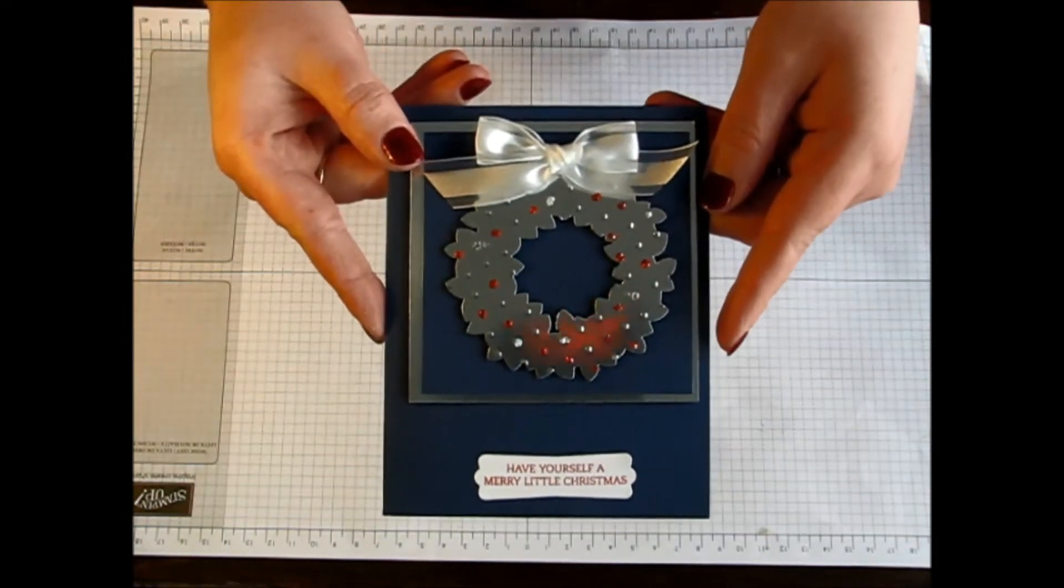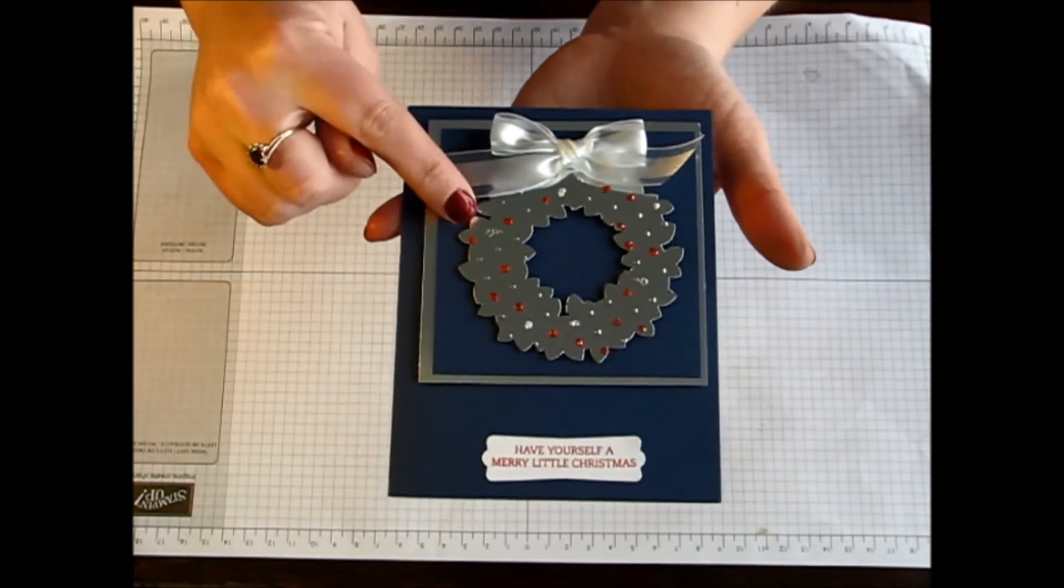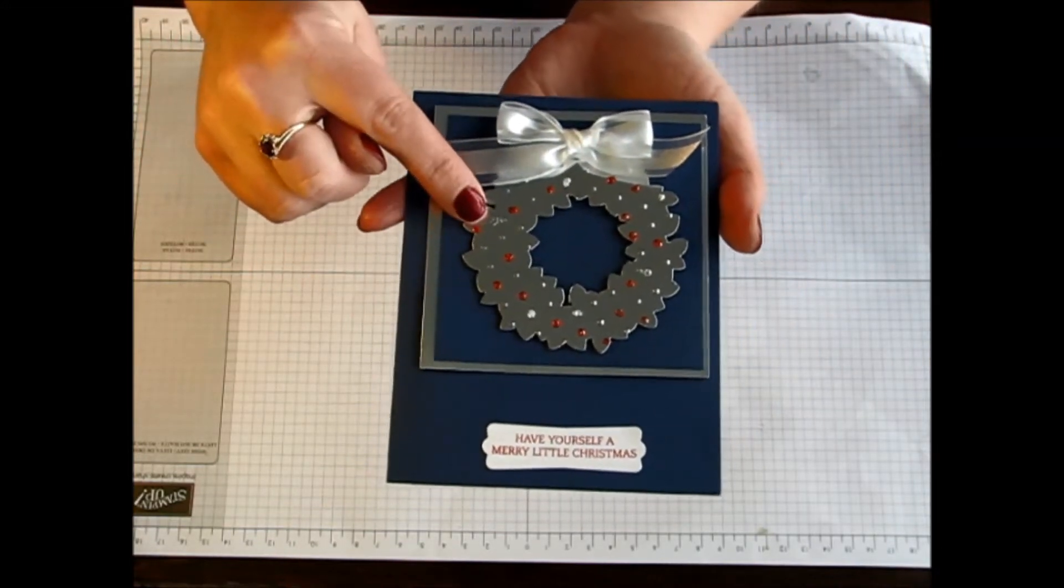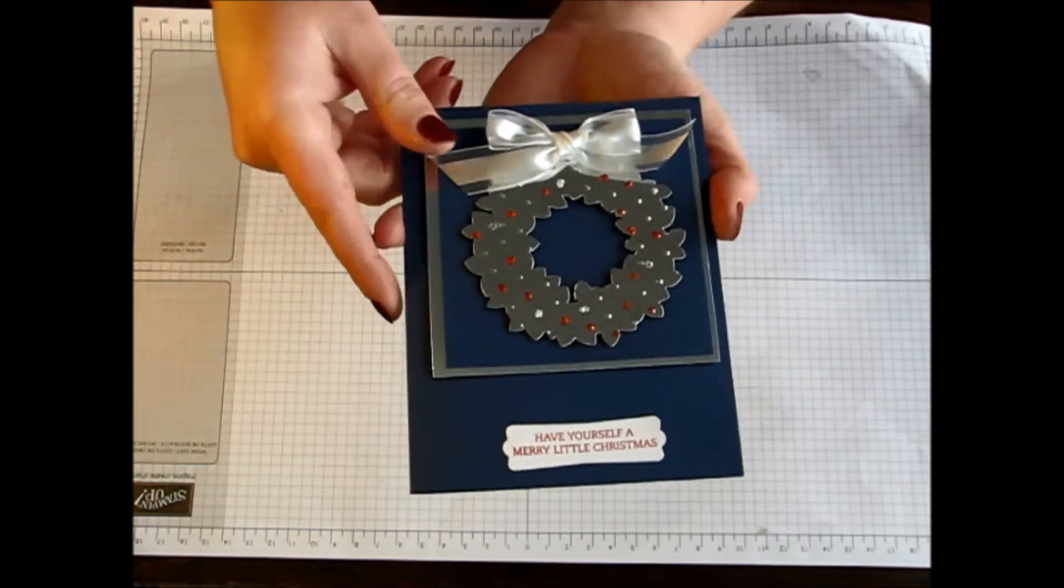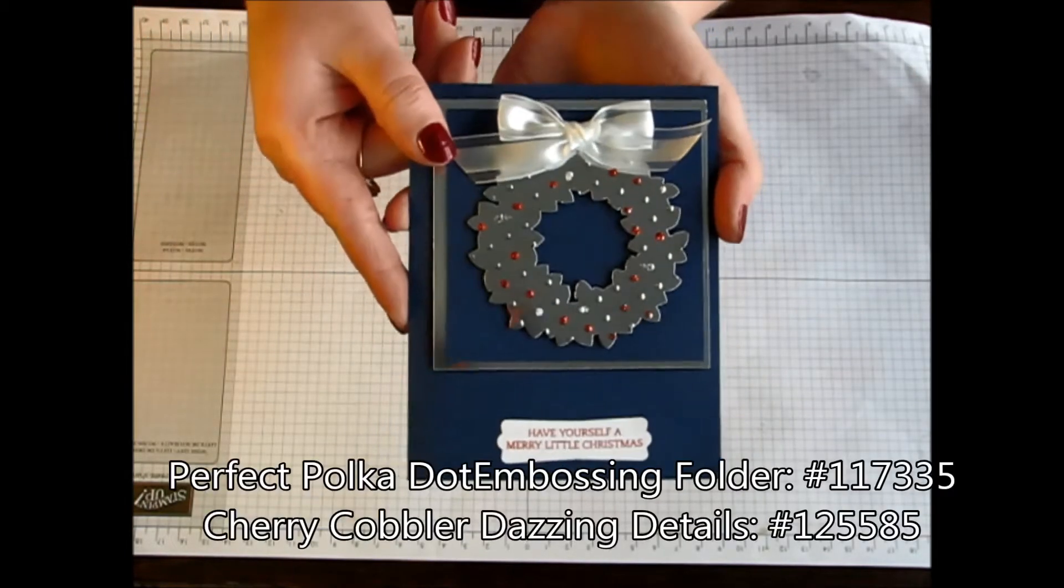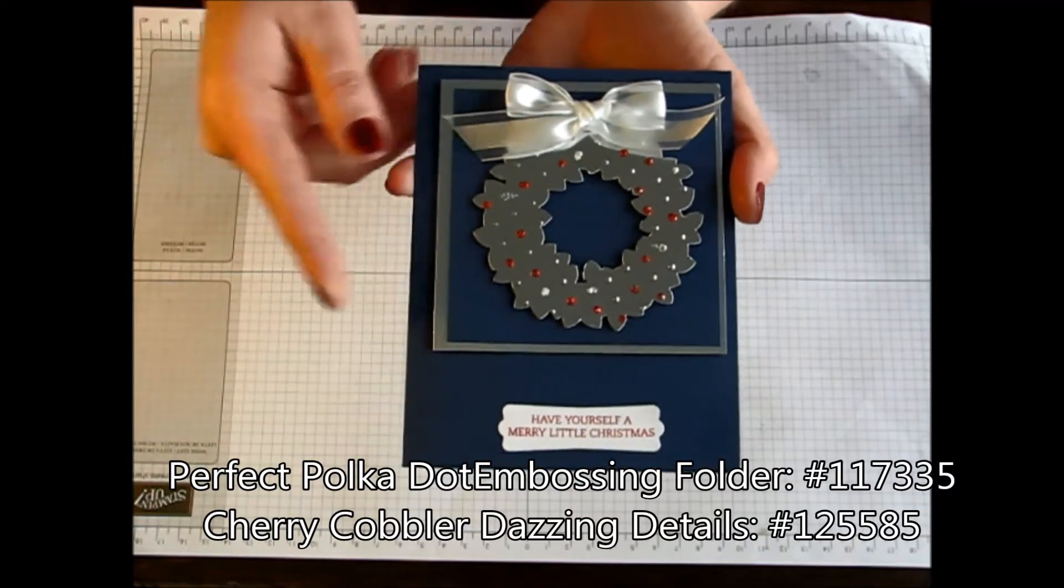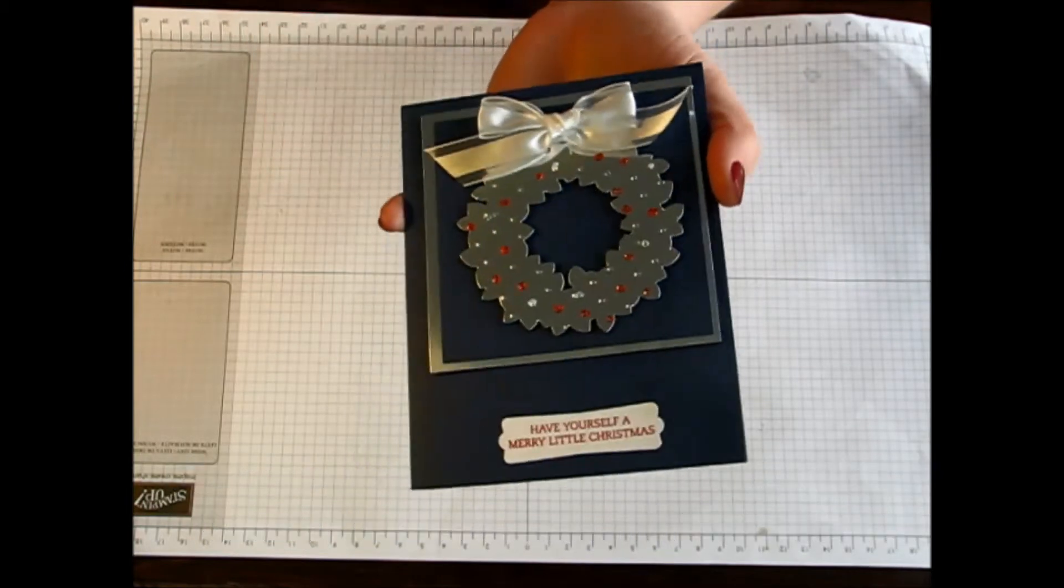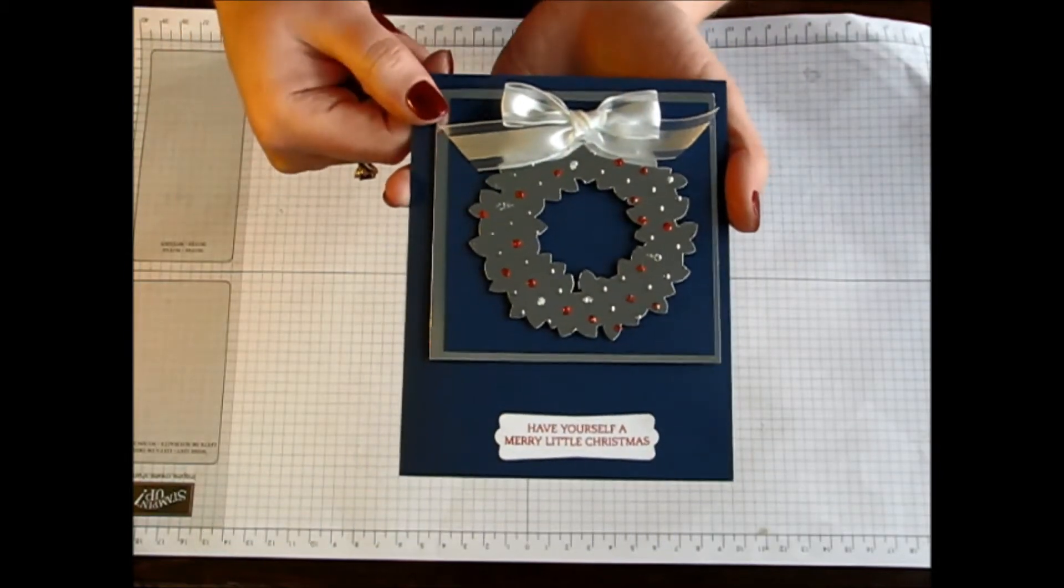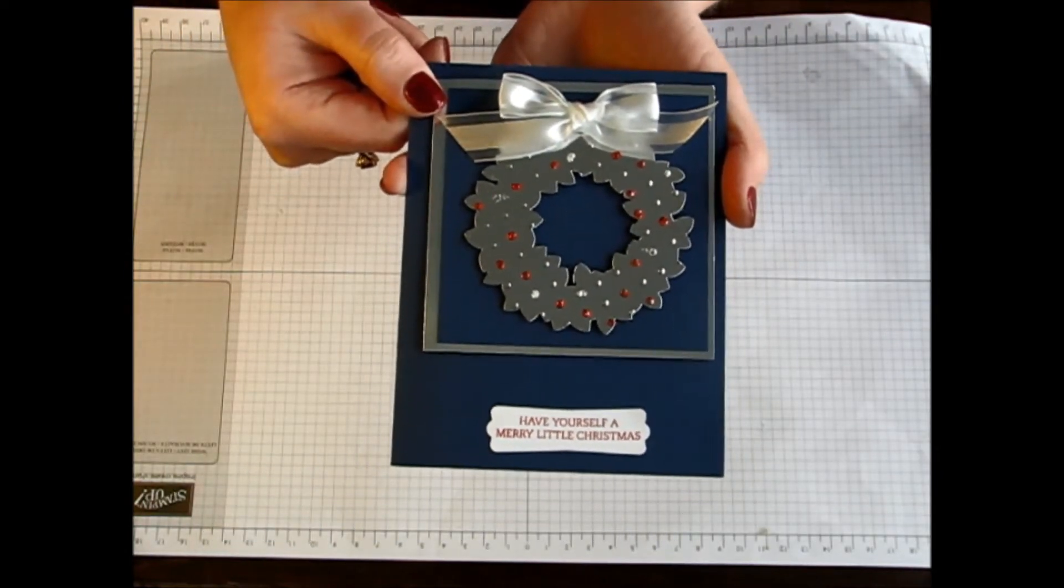I came up with this amazing sample here. I used the wreath for that with my silver foil sheets and then I also added a little bit of embossing. You can see that the little Perfect Polka Dots embossing folder was used with that one. Then I added some of the real red dazzling details just to kind of accent some of those dots to make it look like little hollies. How fabulous!